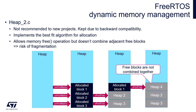The second model, heap2, is an obsolete one, kept for compatibility reasons. It implements the Best Fit algorithm for memory allocation and also implements memory release functions. However, it does not combine released blocks into bigger ones. It is stored within the heap2.c file.